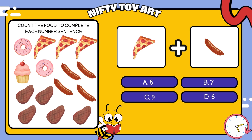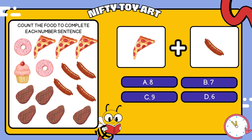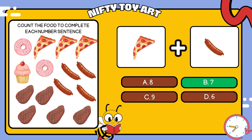We have pizzas and sausages. How many foods is that in total? That's right, seven.